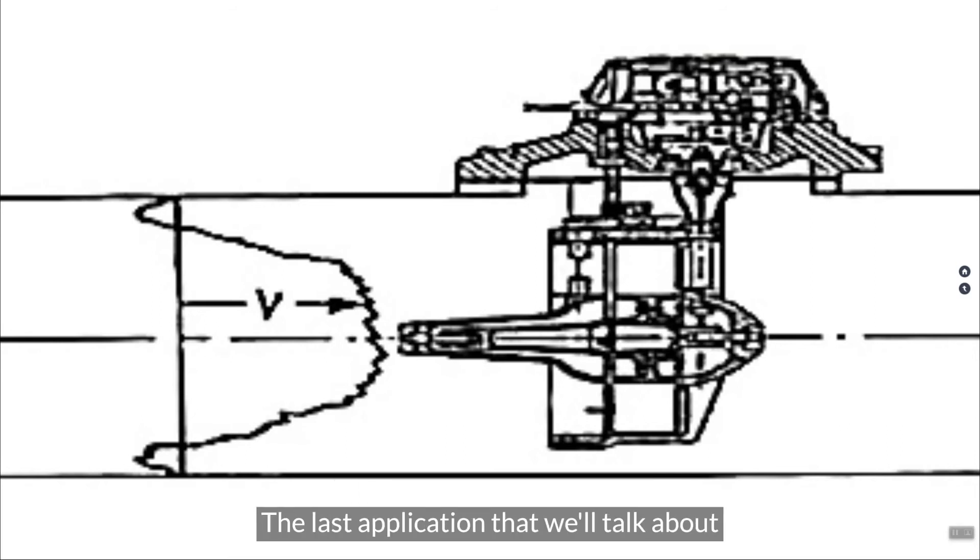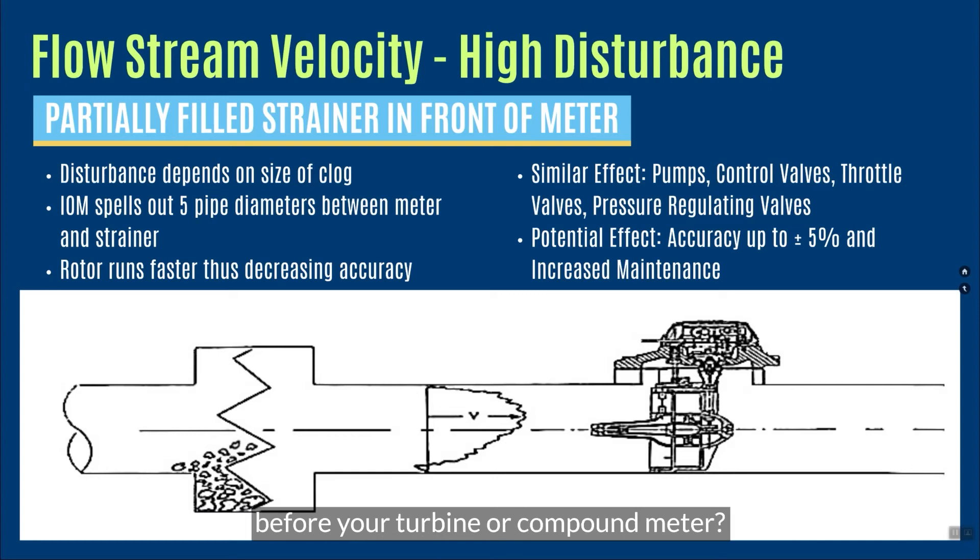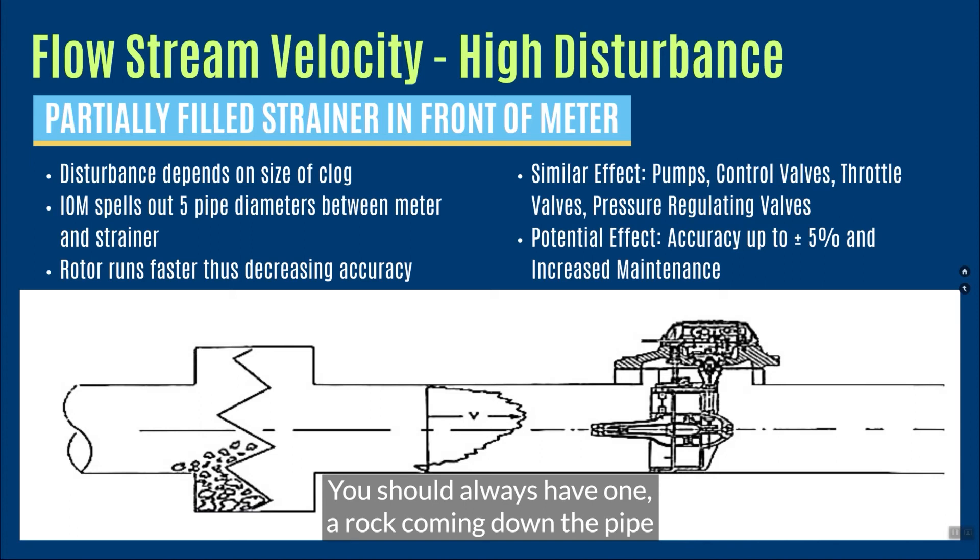The last application that we'll talk about is something that's sort of near and dear to my heart. I always say this to utilities. I always ask the question, do you have a strainer installed before your turbine or compound meter? You should always have one. A rock coming down the pipe will ruin a turbine element. It doesn't have a strainer itself right before that.